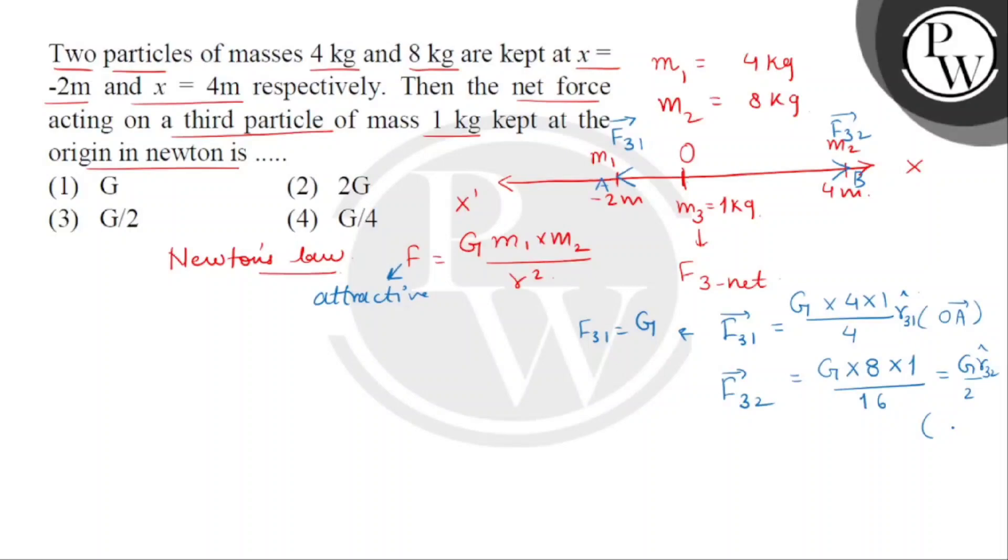We can see that F31 and F32 are in opposite directions. F31 has magnitude G and F32 has magnitude half of G, where G is universal gravitation constant. We get net force as F31 minus F32.